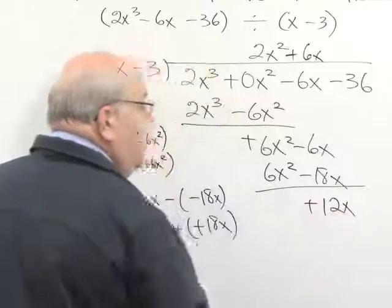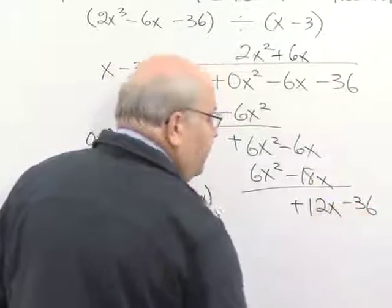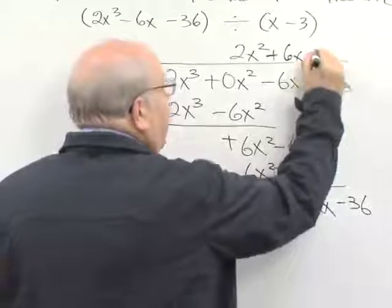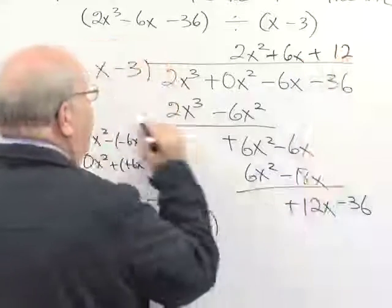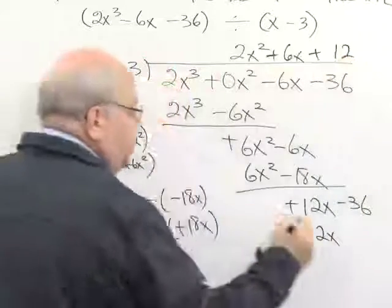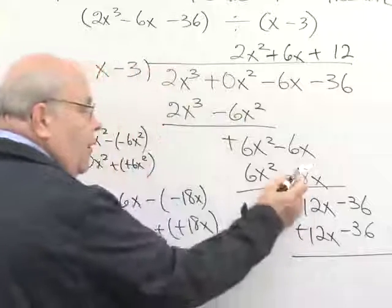Now we're ready for our final step of division. We bring down the -36. We know that x times 12 would give me 12x. We know that 12 times -3 is -36.